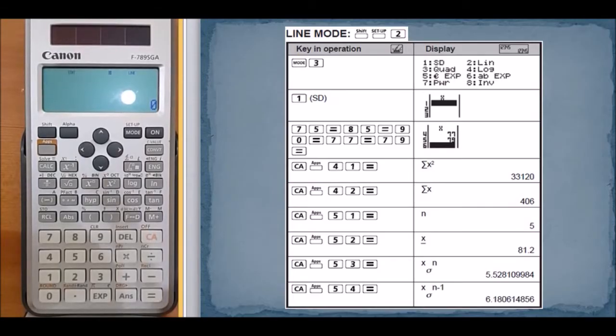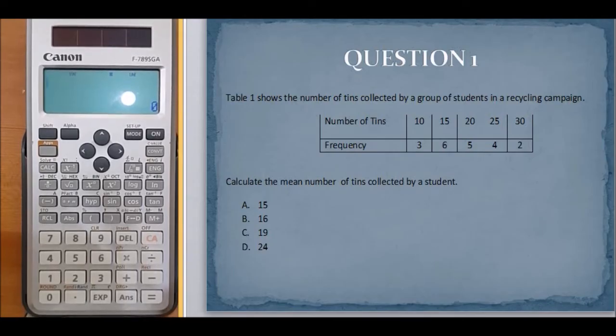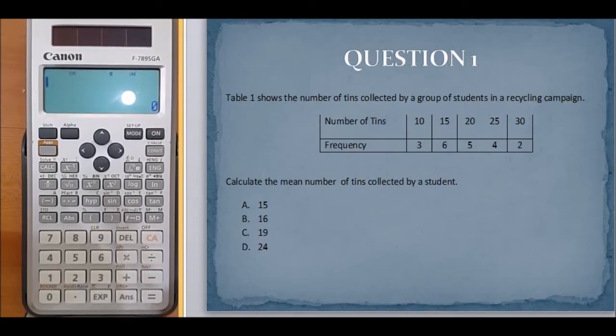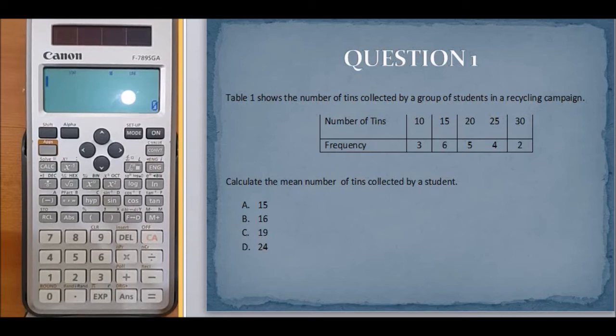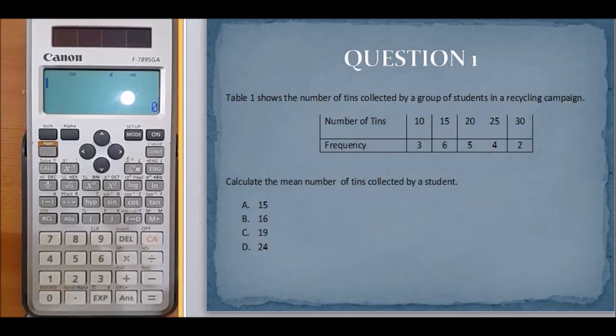Let's see question number one. Table 1 shows the number of tins collected by a group of students in a recycling campaign. Calculate the mean number of tins collected by a student. For this question we need to find the mean, but notice that there is frequency data.